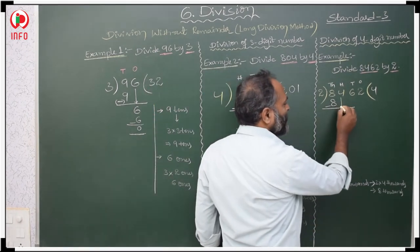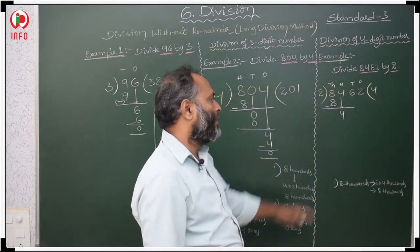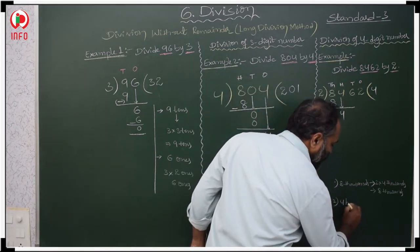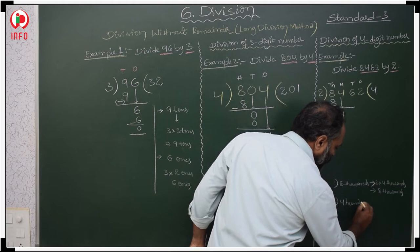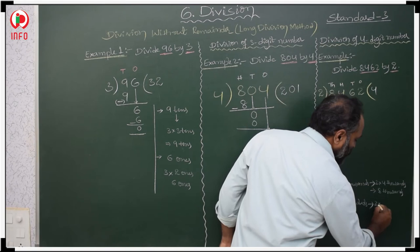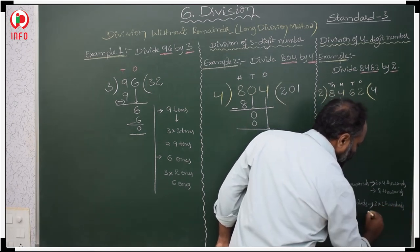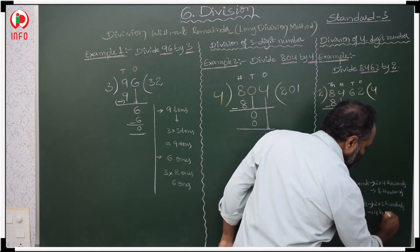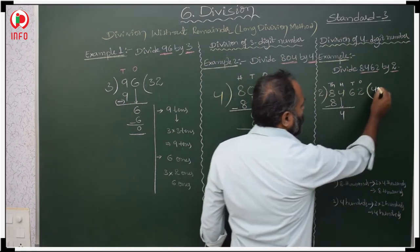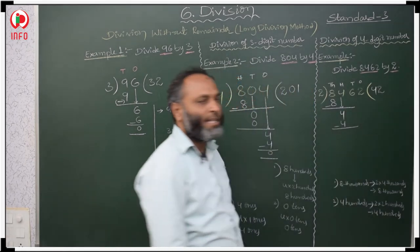Now go for the 100's place. There are 4 hundreds. In the 2 times table, when will you get 4 hundreds? 2 times 2 hundreds gives 4 hundreds. So we write 2 in the quotient. Same number minus same number is 0.